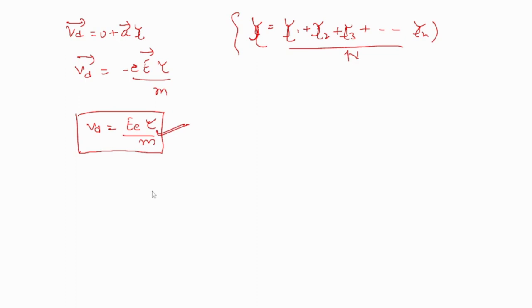You have got the relation between electric field, relaxation time and drift velocity. If the length of conductor is L, then E will be the applied potential difference upon length, V by L. What will be the current flowing through conductor? I equals nAeVd.